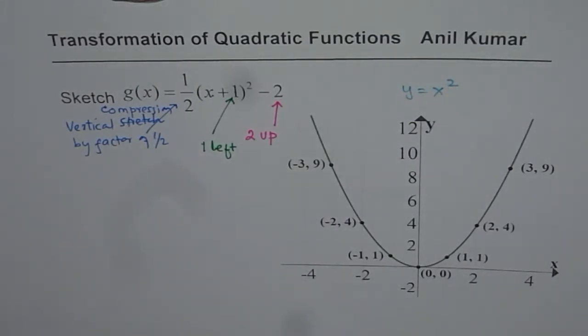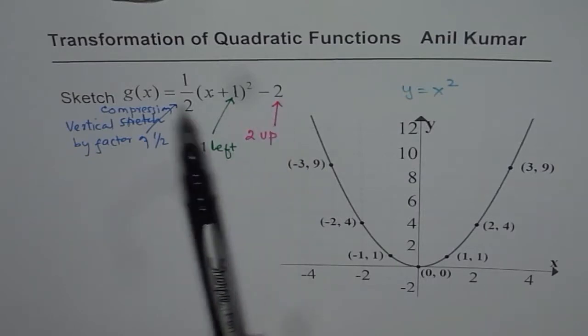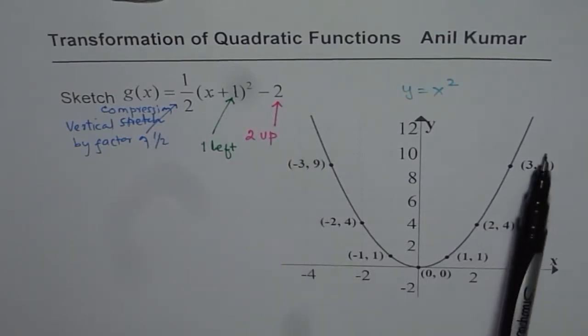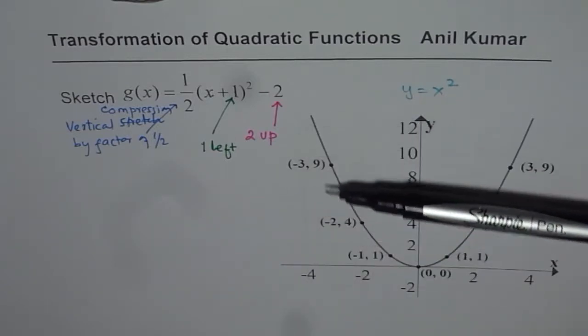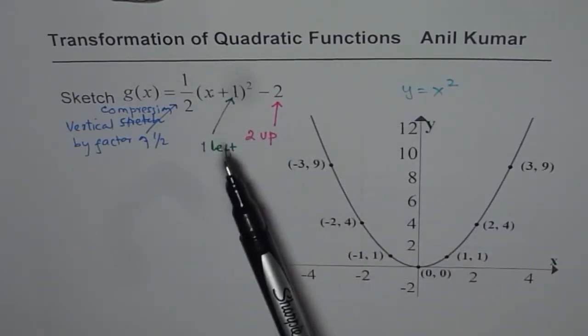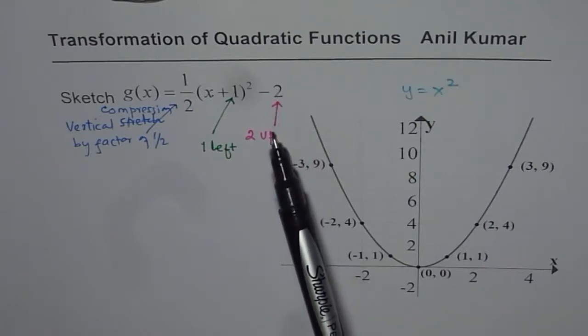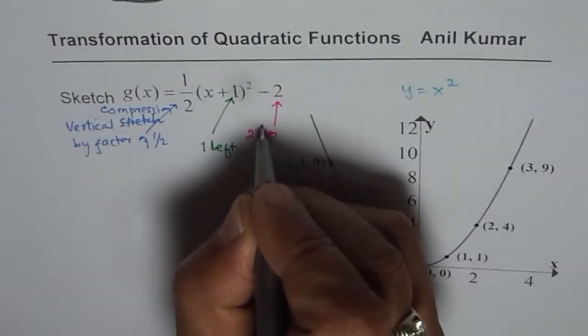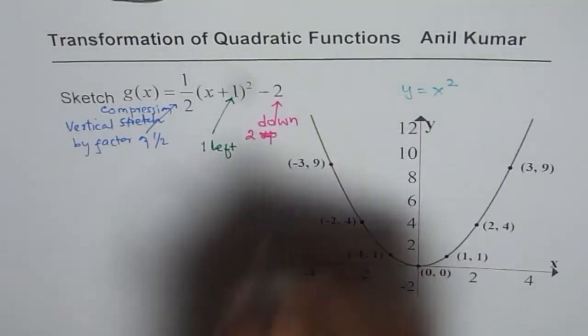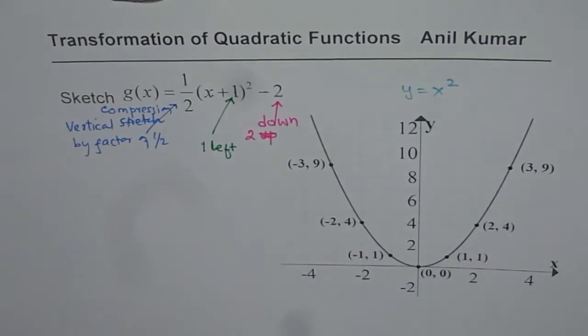You could do these steps from left to right. That means on the given graph, first compress the graph half downwards, and then move it 1 unit left and 2 units down. But we will do it with the help of image points.